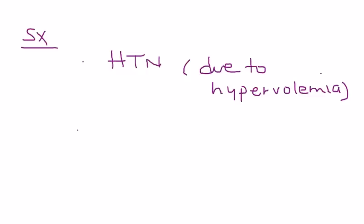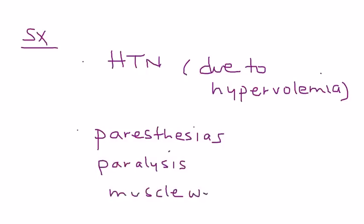Now, in terms of symptoms, a patient may present with some of these: paresthesias, paralysis, and muscle weakness. Now, you might wonder, well, what is the reason for these symptoms? Well, if you recall, aldosterone is kicking out potassium. So, these symptoms are due to hypokalemia, low potassium in the blood.